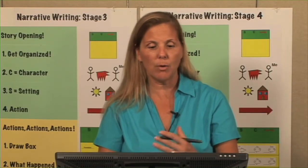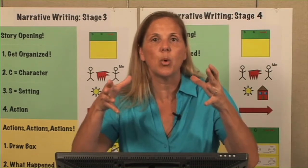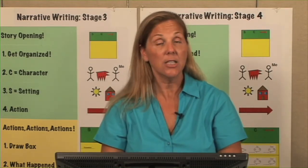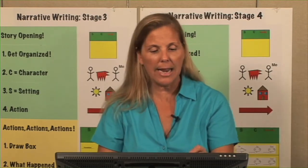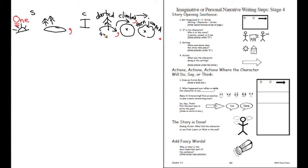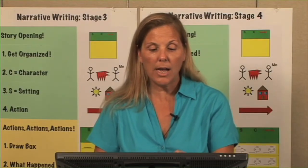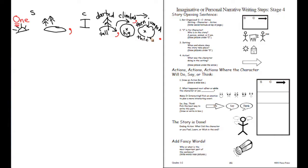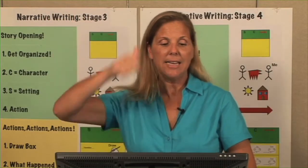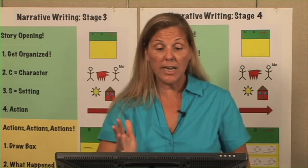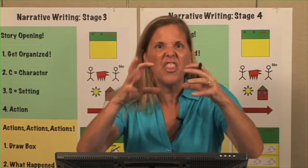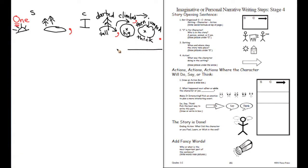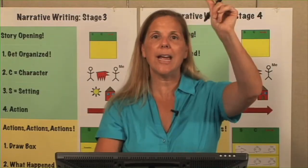I want my reader to see me darting around, climbing, and jumping because that's the action — I'm doing something towards these things, so it's important for the reader to see it. What kind of tree would I be darting around? Maybe tall trees. What kind of rock did I climb? Maybe a big rock. And the bush was so thick with branches. So: one day down at the lake, I darted around tall trees, climbed up a big rock, then jumped into a thick bush. We have our story opening.